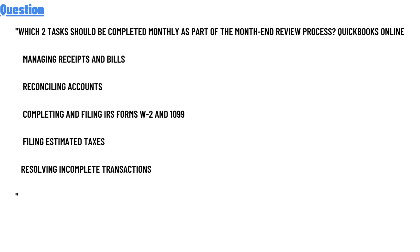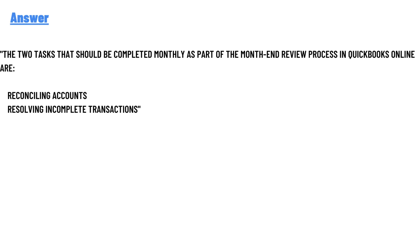The correct answer is: the two tasks that should be completed monthly as parts of the month-end review process in QuickBooks Online are reconciling accounts and resolving incomplete transactions.